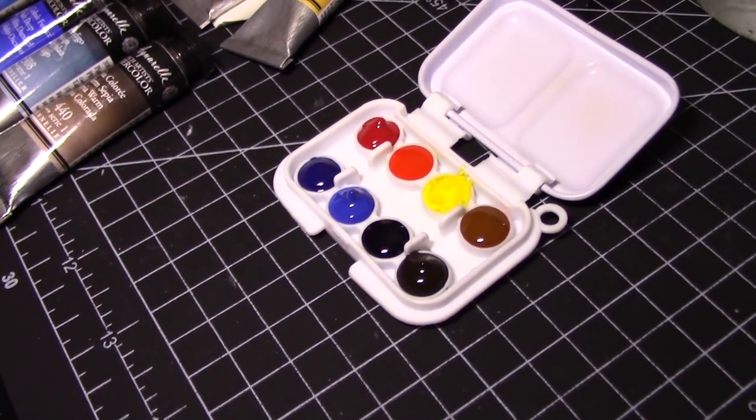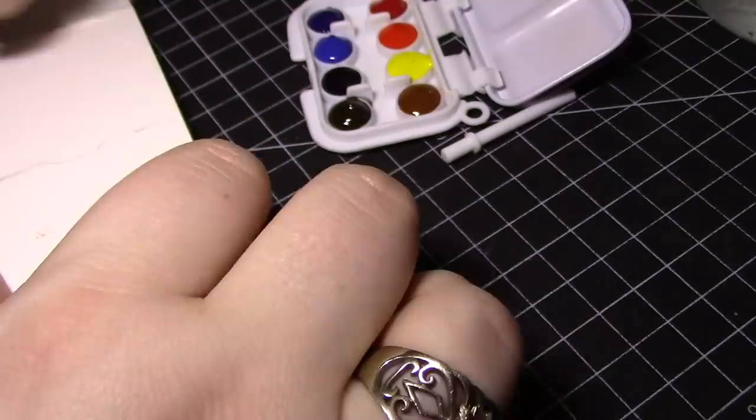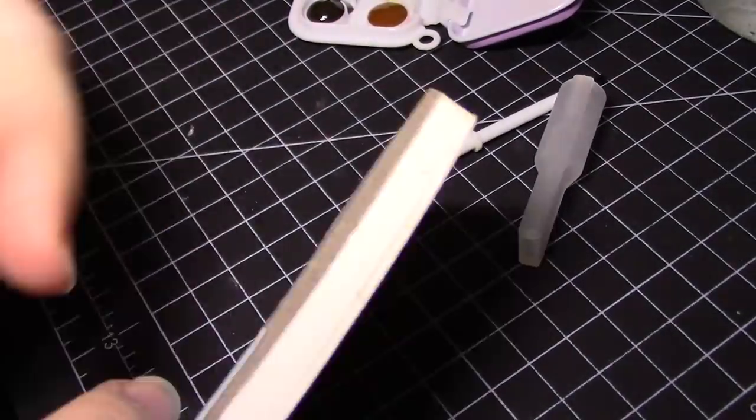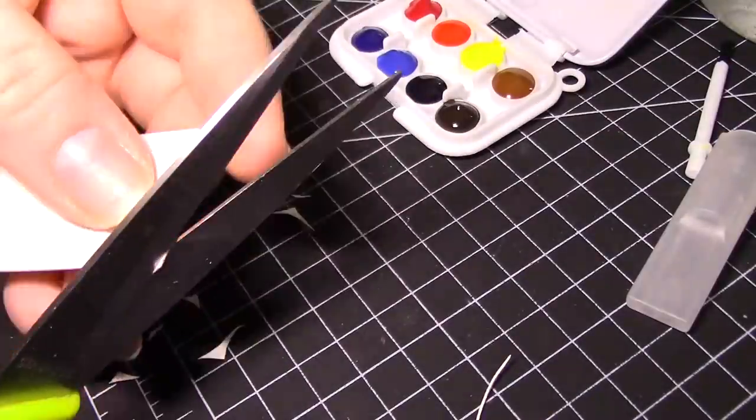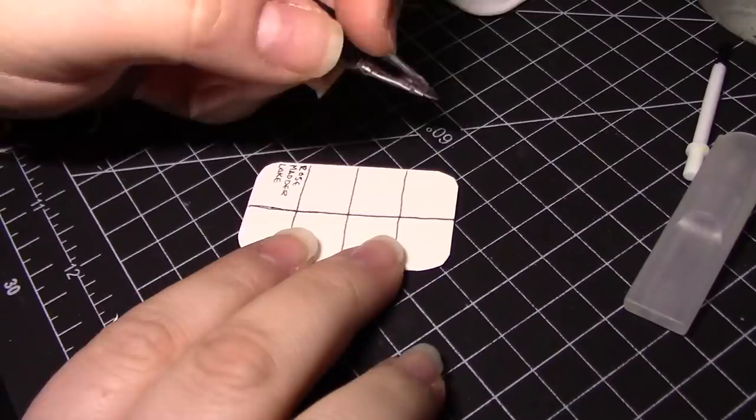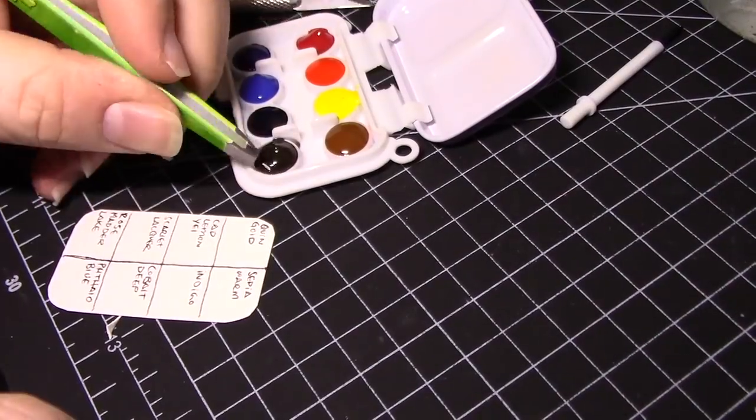I knew I'd want to make a color chart to make it easier to refill once the paint started to run out, so I traced the shape of the palette on a piece of paper, wrote down the color names, made swatches, and laminated it with tape, just like we did in our Holbein palette setup. Except this is one piece of paper instead of many.